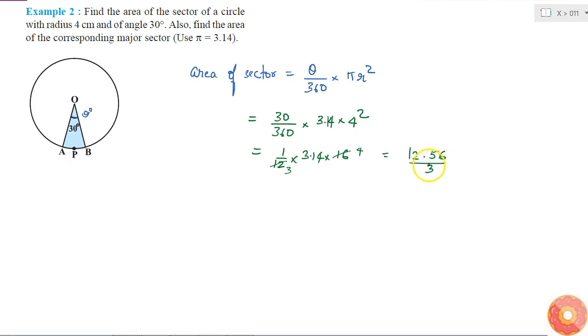What is the value of 12.56 by 3? It is nearly equal to 4.186. The radius is 4 centimeters, so it is 4.186 centimeter squared.